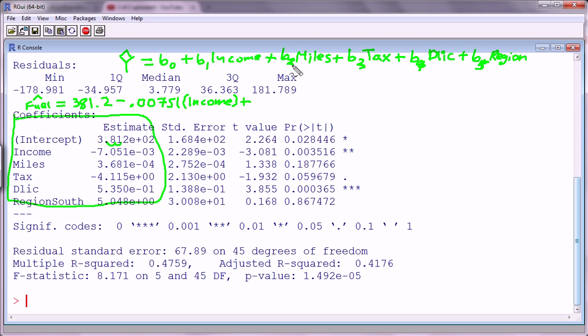What's B2? B2 is the coefficient for miles. So that's 3.681 times 10 to the negative fourth. So I've got to take this one, two, three, four decimal places to the left. So this is 0.0003681 times miles.